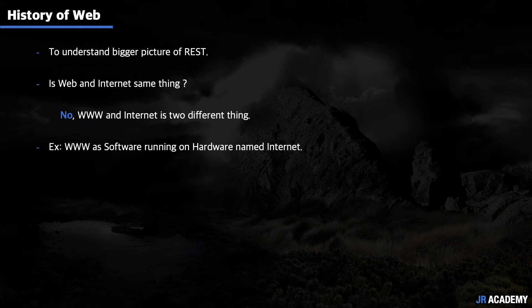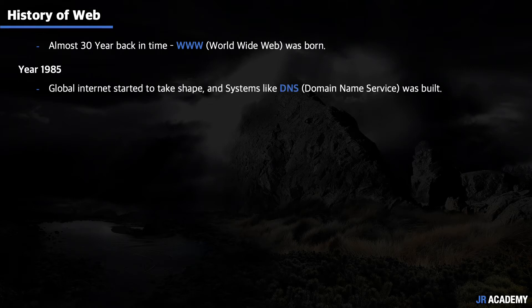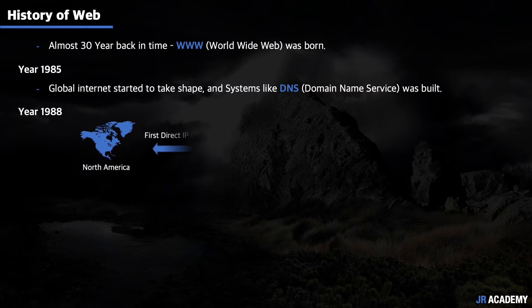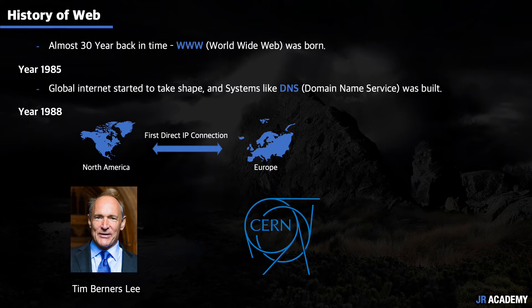How did this come into the picture? Almost everything around us is online today — from mobiles to glasses, cars to homes. Going back 30 years, WWW was born around 1985 when the global internet started to take shape. A system like DNS (Domain Name Service) was built, and in 1988 the first direct IP connection between Europe and North America was made. A man named Tim Berners-Lee was working at CERN, the European Organization for Nuclear Research.